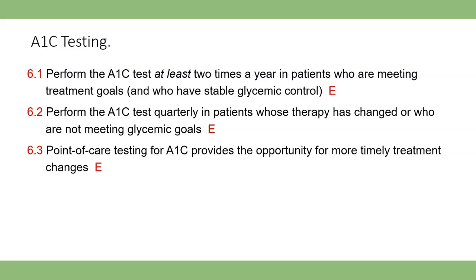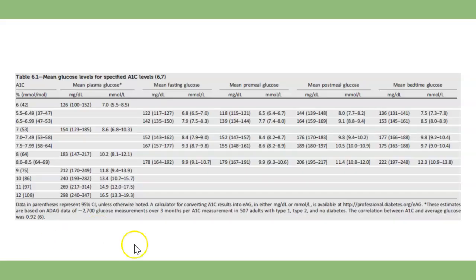I do love the new apps that are out now. Otherwise, you want to do it quarterly if they're not meeting their goal. These are mean glucose levels for specific A1C levels. For example, if they have between a 7.5 and 7.9, the mean fasting glucose is around 167.